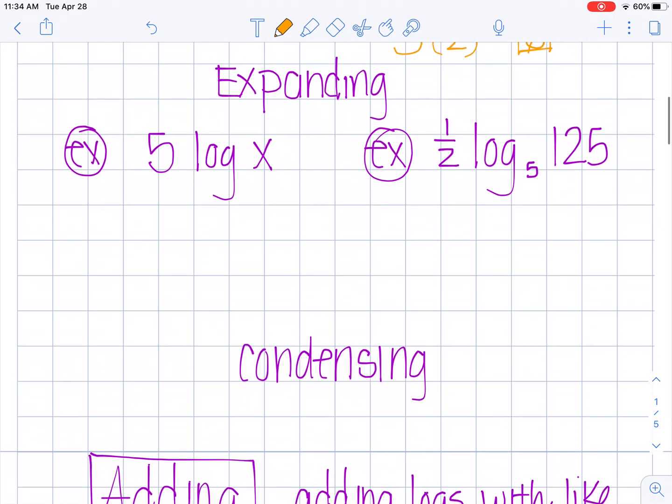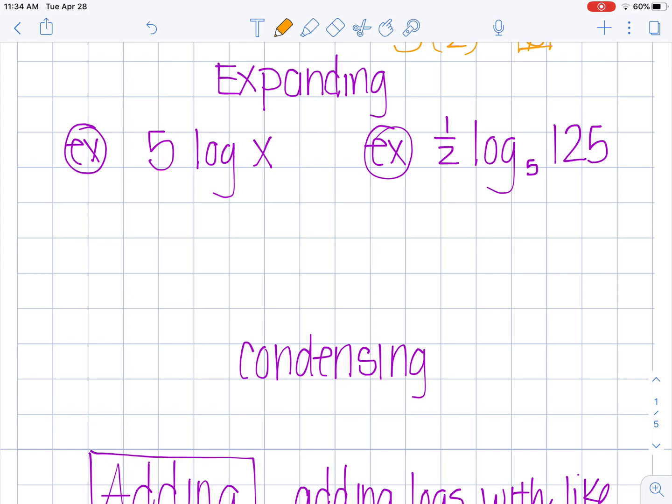So let's do some condensing where we have a number out in front and now we're going to move it up into the exponent. The rule also works backwards. If I have a number out in front here I can say I need to condense this logarithm, I need to make it smaller. So this is going to now come up into the spot on my exponent. This is going to become the log of x raised to the fifth power.